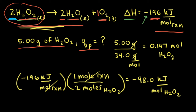So two moles of hydrogen peroxide would give off 196 kilojoules of energy, and one mole of hydrogen peroxide would give off half that amount, or 98.0 kilojoules of energy.